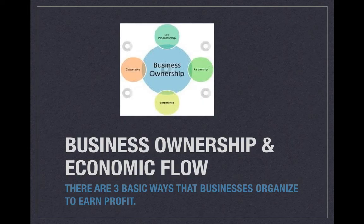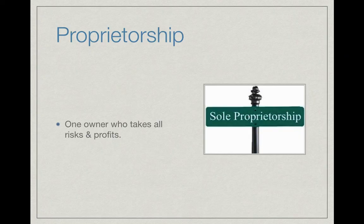There are three basic ways that businesses organize to earn profit. The first way is proprietorship. This is one owner. The owner will take all of the risks, but he will also take all of the profits and make all of the money from the business venture.